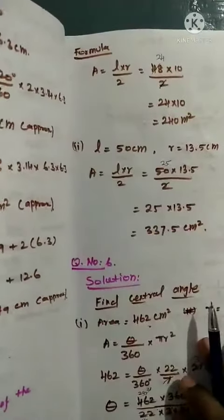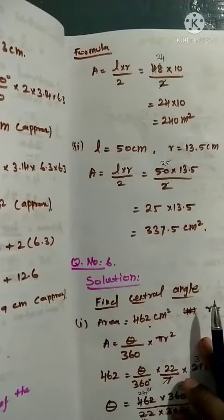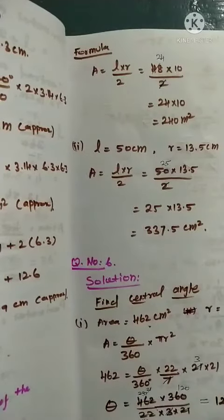Then subdivision 2, radius is 13.5 cm. So here we are going to get the area of the sector.